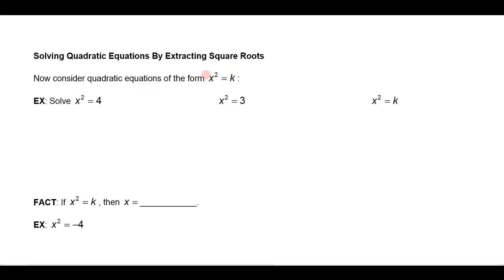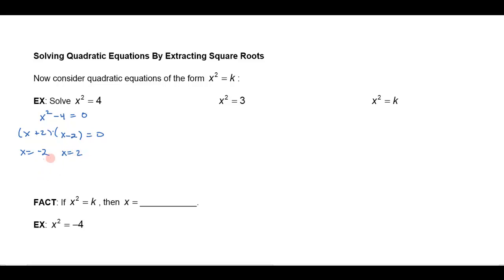Let's consider a quadratic equation of this form: x squared equals a number, like x squared equals 4. If I were to solve this by factoring, I get 0 on one side, take the 4 over, and factor that as a difference of squares: x plus 2 times x minus 2 equals 0. Setting each factor equal to 0, I get x equals negative 2 and x equals positive 2, which I can abbreviate as x equals plus or minus 2.